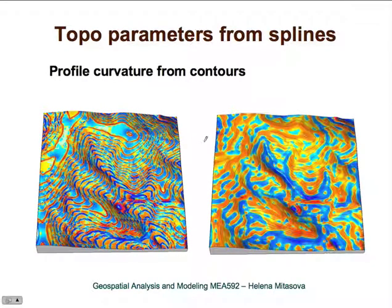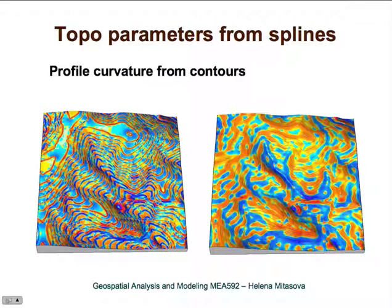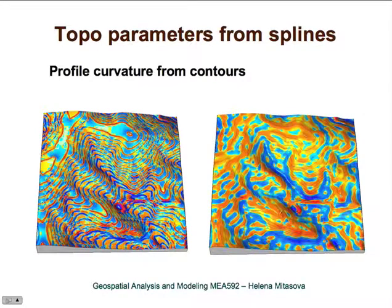When computing profile curvature from contours with very high tension, the spline creates artificial waves along contours—giving a convex shape along the contour and a concave shape in between. By tuning the tension, we can eliminate this artificial pattern and get a very nice representation of valleys and ridges.